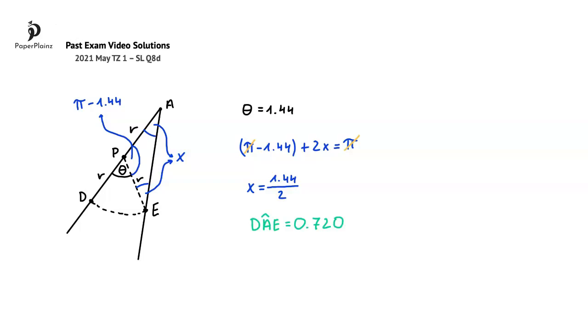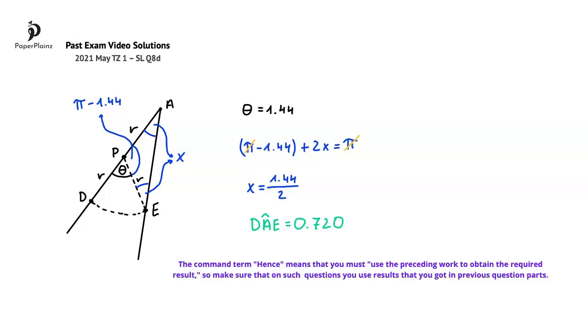An exam-taking tip to take away from here is that the common term hence means that you must use the preceding work to obtain the required result, so make sure that on such questions you use results that you got in previous question parts. The common term hence in this question is not only a hint, but shows a requirement that if you want to earn full marks, you must use the value of theta from the previous question part.